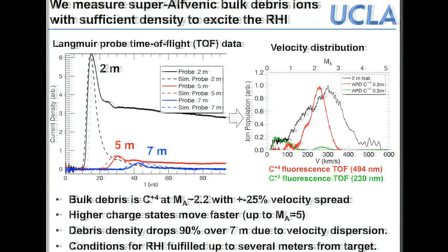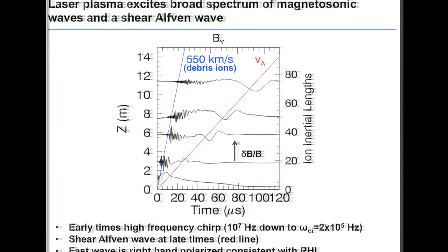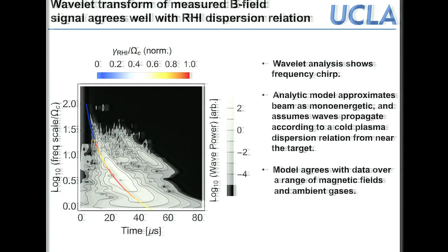Looking at what happens to the magnetic field: traces as a function of time at different distances from the target show high-frequency oscillations at early times with a frequency chirp — starting at high frequency then decreasing. A Fourier transform or wavelength analysis gives frequency as a function of time, and comparing with the dispersion relation for the right-hand instability — shown as a colored curve — it agrees remarkably well, even showing where the highest growth rate and highest frequency are expected. We are very convinced we are observing the right-hand instability.